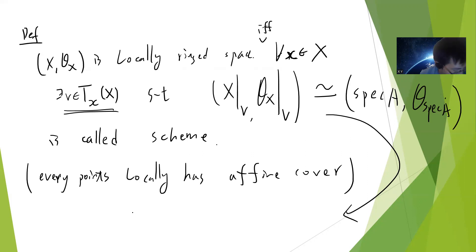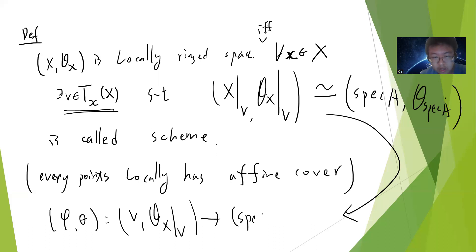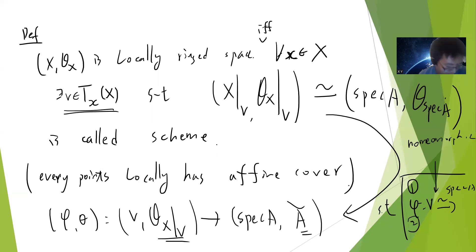Let me just recall: the ring space has a local ring map — basically you have a morphism, usually called phi and theta, from one local ring space to another. The first condition is that phi is a homeomorphism of topological spaces, and the second is that there is a sheaf isomorphism.